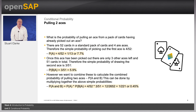What is the probability of pulling an ace from a pack of cards having already picked out an ace? There are 52 cards in a standard pack of cards and four are aces. Therefore the simple probability of picking out the first ace is 4 divided by 52, which is 1 divided by 13, or 7.7%. However, once this ace has been picked out there are only three aces left and 51 cards in total. Therefore the simple probability of drawing that second ace is 3 divided by 51, which is 5.9%.